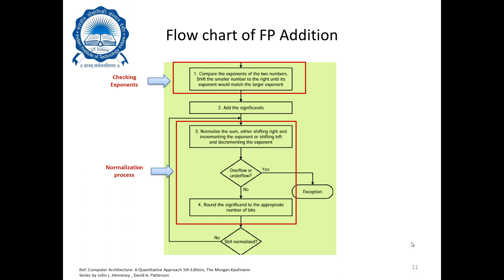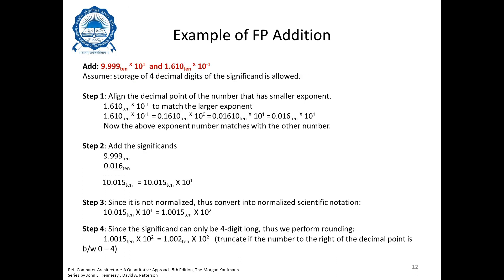For our example, we take two numbers: 9.999 base 10 × 10¹ and 1.610 base 10 × 10⁻¹. We assume that storage of four decimal digits of the significand is allowed. The first step is to compare the exponents and align the decimal point of the number with the smaller exponent, which is 1.610 × 10⁻¹.